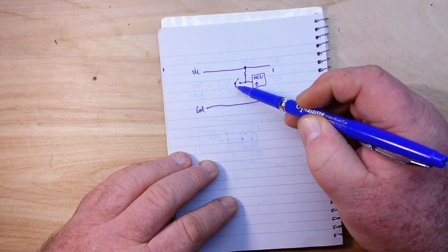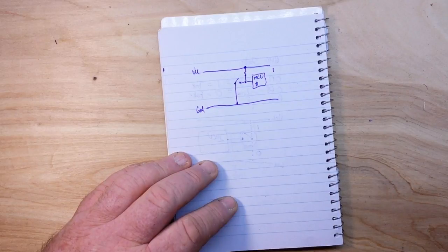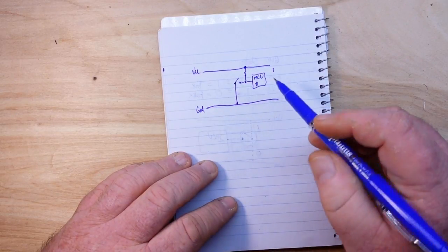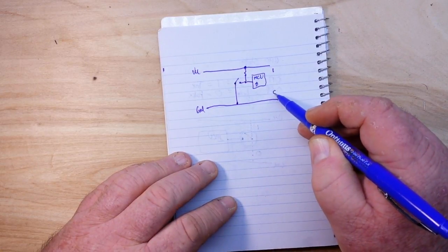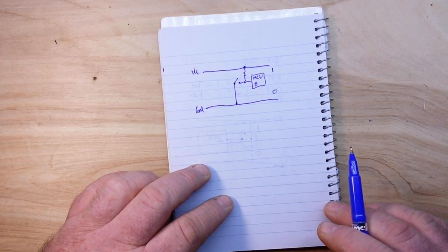And then we connect the other end of our switch like this to ground. And when we connect the switch we will get a logical zero.